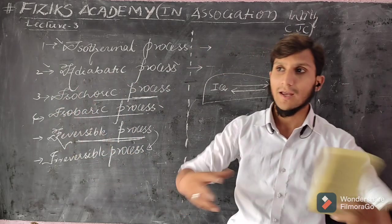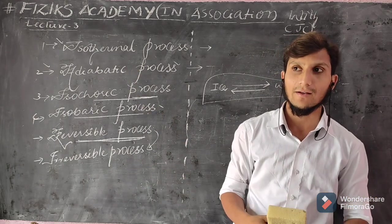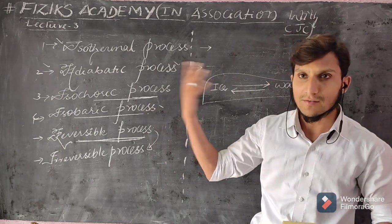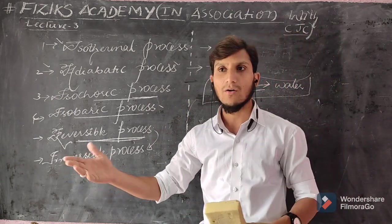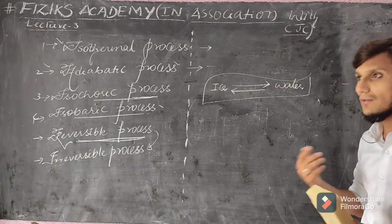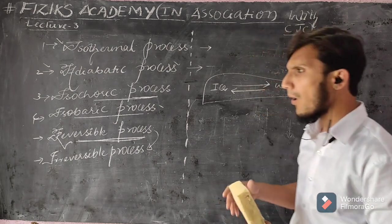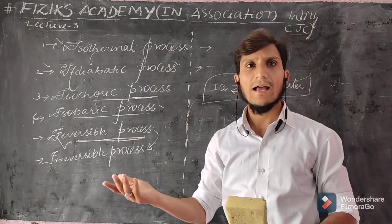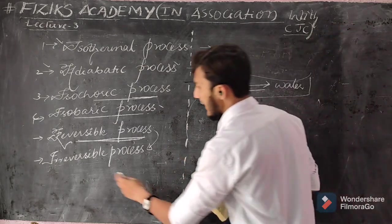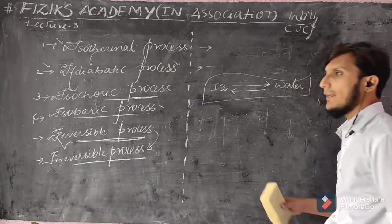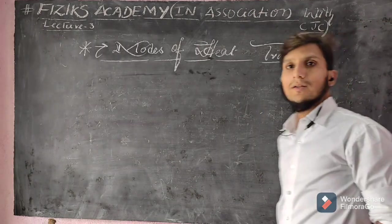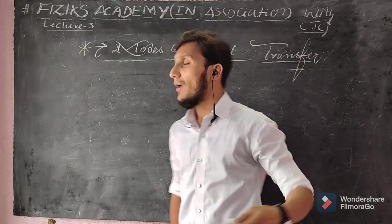Examples of irreversible processes include explosion of bombs and firecrackers, rising of the moon and sun, day and night cycles, and rainfall. All naturally occurring phenomena are irreversible processes — they cannot be brought back to their initial stage.